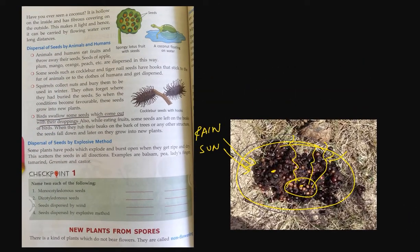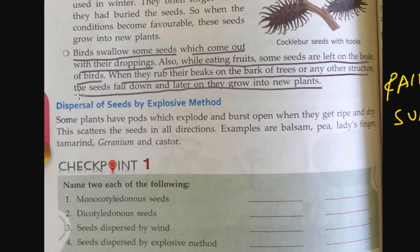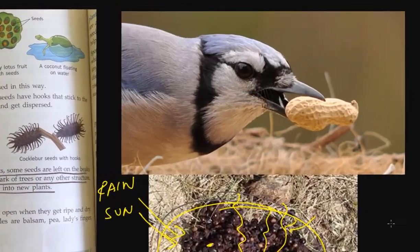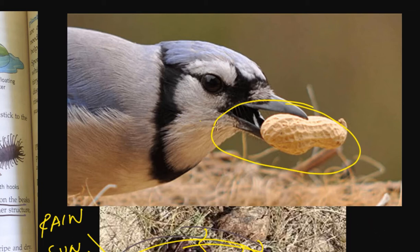Also, while eating fruit, some seeds are left on the beaks of the bird. When they rub their beaks on the bark of trees or any other structure, the seeds fall down and later grow into new plants. This is another way birds help in seed dispersal.